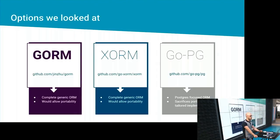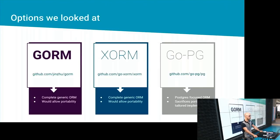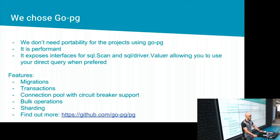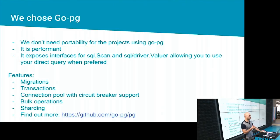When looking at the different options, we looked into three: GORM, SHORM, and GoPG. GORM and SHORM are very similar — they're generic ORMs, so they allow you to interact with the databases in a generic way and offer portability, which means if you wanted to move to a different database, you would be able to. GoPG is focused on Postgres only. It sacrifices portability — so if you want to swap to a different database, you're not able to — but it's a tailored implementation for Postgres. We chose GoPG for some of our apps, and the main reason is we don't really need portability. From my experience, you're more likely to rewrite your app anyway when you switch databases. So we decided to sacrifice portability to have a tailored approach that is more performant and has feature parity with Postgres rather than a generic interface.